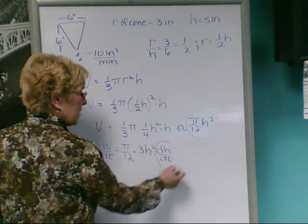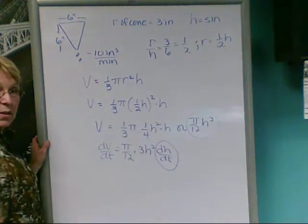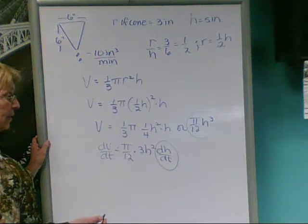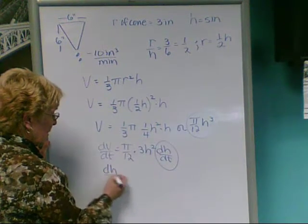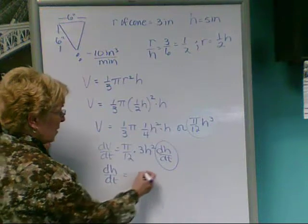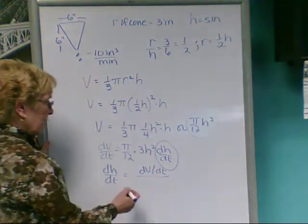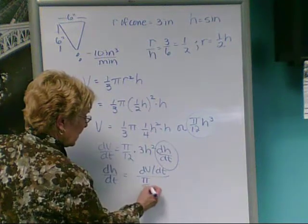Again, this is what we need to solve for. The question is what is or how is the water level changing at a specific point in time. So let's solve for that. We'll take dv dt and divide by pi over 4 times h squared in the denominator.